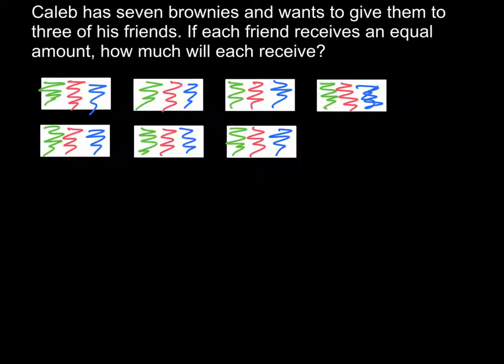When I drew my figure, this is what it looked like. I did seven brownies, and here I just represented them as white rectangles. And then I divided them into three parts each, one part for each friend, and each friend is a different color.